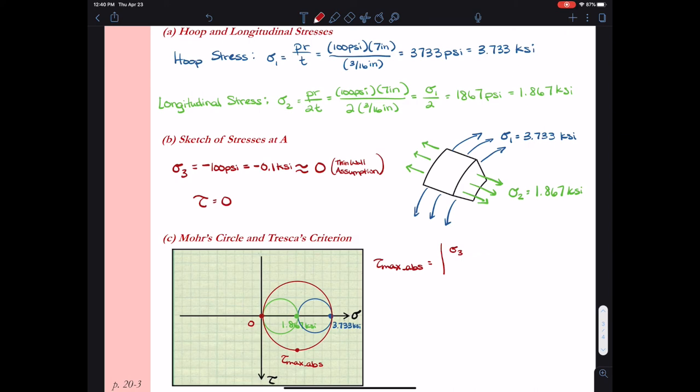I need to calculate tau max absolute. Tau max absolute will be equal to sigma 1 minus sigma 3 over 2 and then take the absolute value. If you're paying attention, you would see that the radius of that red circle is actually equal to sigma 2 in this instance, because sigma 2 is halfway between sigma 1 and sigma 3. So tau max absolute is 1.867 ksi.